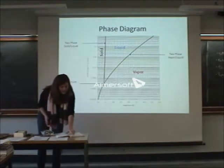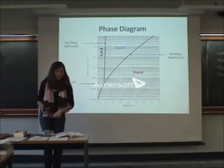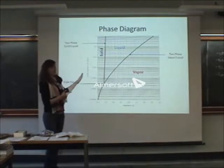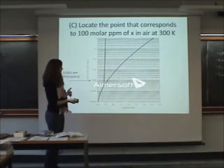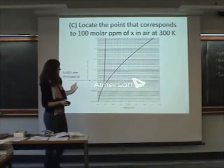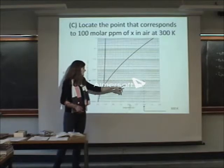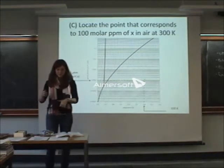Consider the phase diagram. Locate the point that corresponds to 100 molar parts per million of x. We know our temperature. We know our partial pressure, right? This is partial pressure. So, pretty straightforward. You know your partial pressure, you know your temperature. So it is right there. Everyone go with that? Cool.